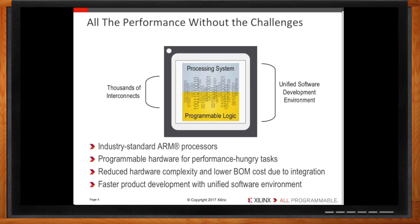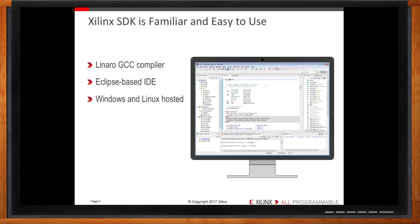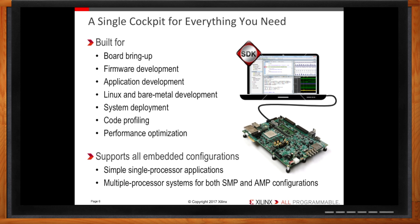Let me show you how we did it. We started by building a C/C++ software development kit. Xilinx SDK meets all the standard requirements for a software development kit — it's built on the popular Linaro GCC compiler, the IDE is Eclipse-based and familiar to software engineers, and it runs on Windows and Linux. Under the hood, Xilinx SDK is a single cockpit for all your development needs. You don't have to go in and out of different tools for firmware or application development — everything is integrated into one tool that supports all embedded processing configurations, from single processor to multi-processor systems in either SMP or AMP configurations.